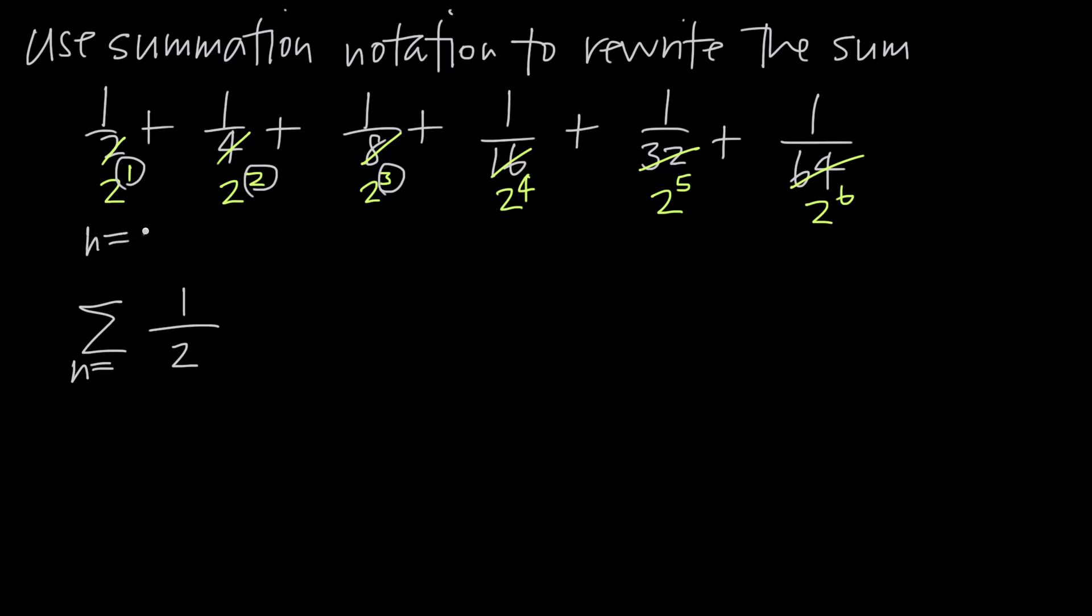So if we say this is going to be n equals 1, this is going to be n equals 2, n equals 3, n equals 4, n equals 5, and n equals 6. You always just count up from either 1 or 0.